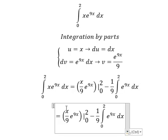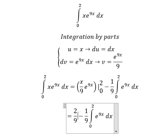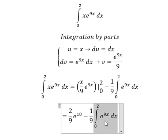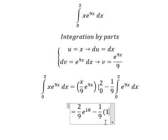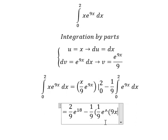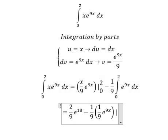We put 2 and 0 in here. That is 2 over 9, e to the power of 18. The integration of this one gives us 1 over 9, e to the power of 9x, and we put the bounds from 0 to 2.